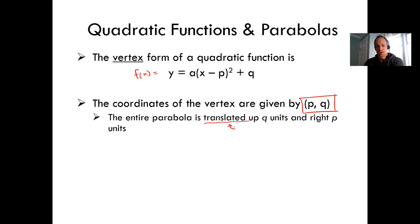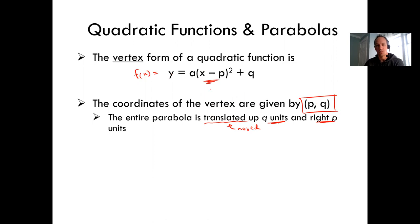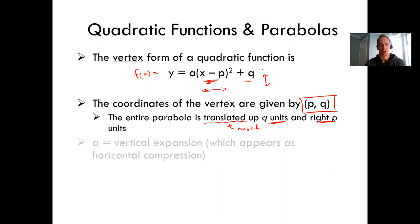What we say is the entire parabola gets translated — which is a fancy way of saying moved — up q units and right p units. Another way of looking at this is from a transformations point of view. We started with y equals x squared, and when we put in factors like p and q, you subtract something from x and it moves left and right, and if you add something over here it moves up and down.